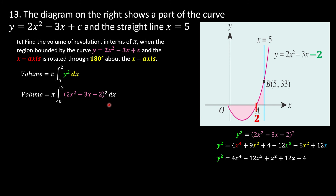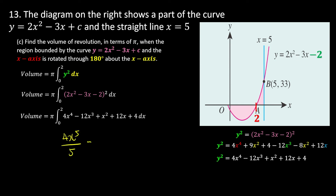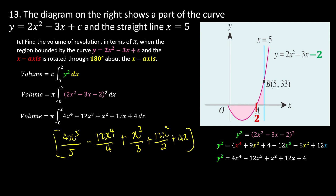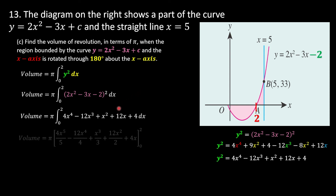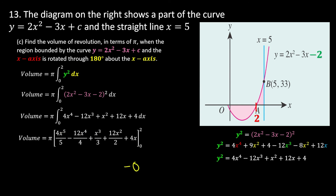Substituting y² back into the integral: π∫(4x⁴ - 12x³ + x² + 12x + 4) dx from 0 to 2. Integrating term by term — increasing each power by 1 and dividing by the new power — gives the antiderivative. Since the lower limit is 0, all lower-limit terms vanish.